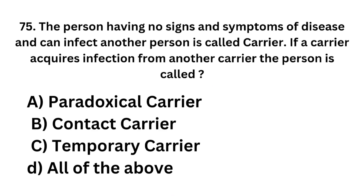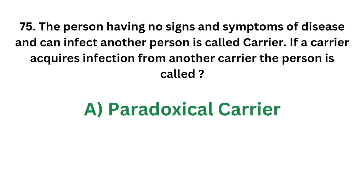Question number 75. A person having no signs and symptoms of disease who can infect another person is called a carrier. If a carrier acquires infection from another carrier, the person is called: Option A - Paradoxical carrier; Option B - Contact carrier; Option C - Temporary carrier; Option D - All of the above. The correct answer is Option A, Paradoxical carrier. If a carrier acquires infection from another carrier, the person is called a paradoxical carrier.